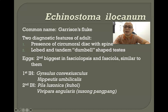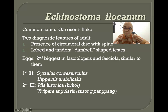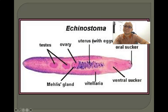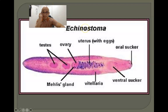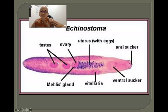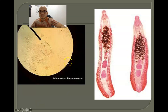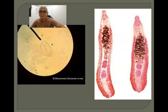The first intermediate hosts are snails — Gyraulus convexiusculus and Hippeutis umbilicalis. The second intermediate hosts are Pila luzonica, known in the Philippines as puhol, and Vivipara angularis, called susong pangpang in the provinces. Morphologically, Echinostoma ilocanum shows an oral sucker, ventral sucker, uterus, and lobed testes — the dumbbell-shaped testes being a key diagnostic feature.